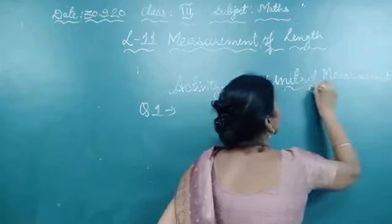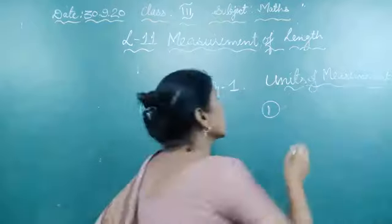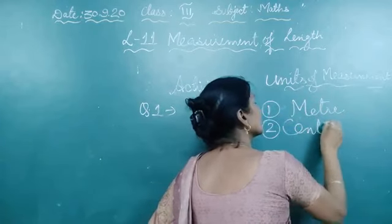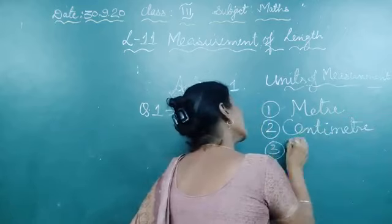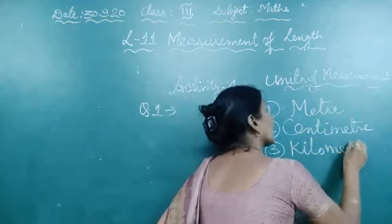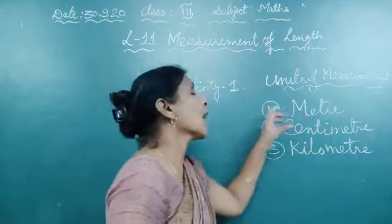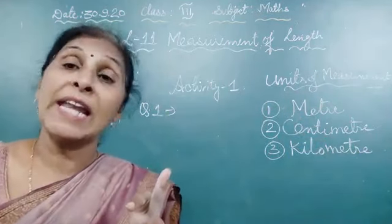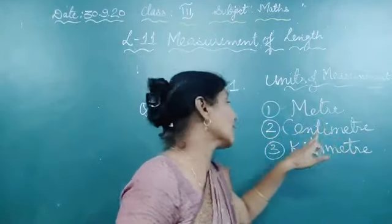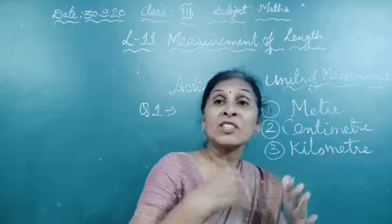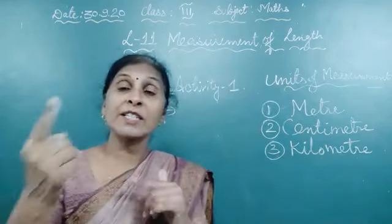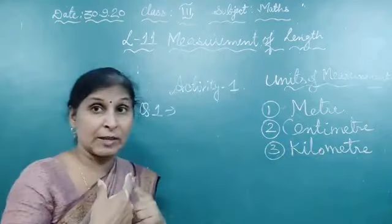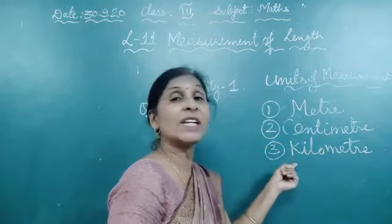There are three units of measurement. The first one is meter. The second one is centimeter. And the third one is kilometer. Meter is the standard unit of length. Centimeter is the smallest unit of length. Kilometer is used to measure distance.